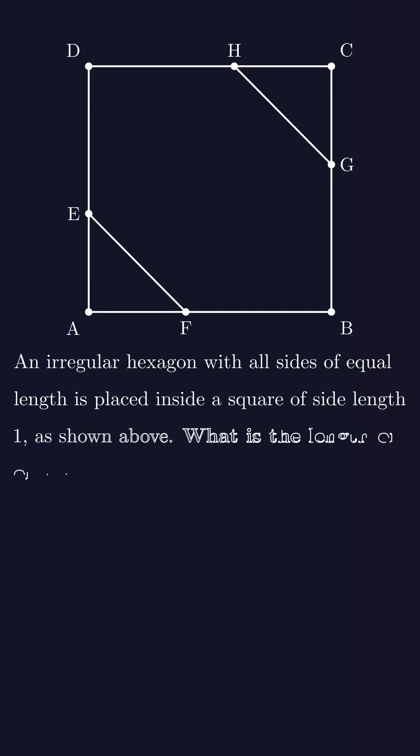Here's what the question says. An irregular hexagon, with all its sides of equal length, is placed inside a square with side length 1 unit. What is the length of one of the hexagon sides?